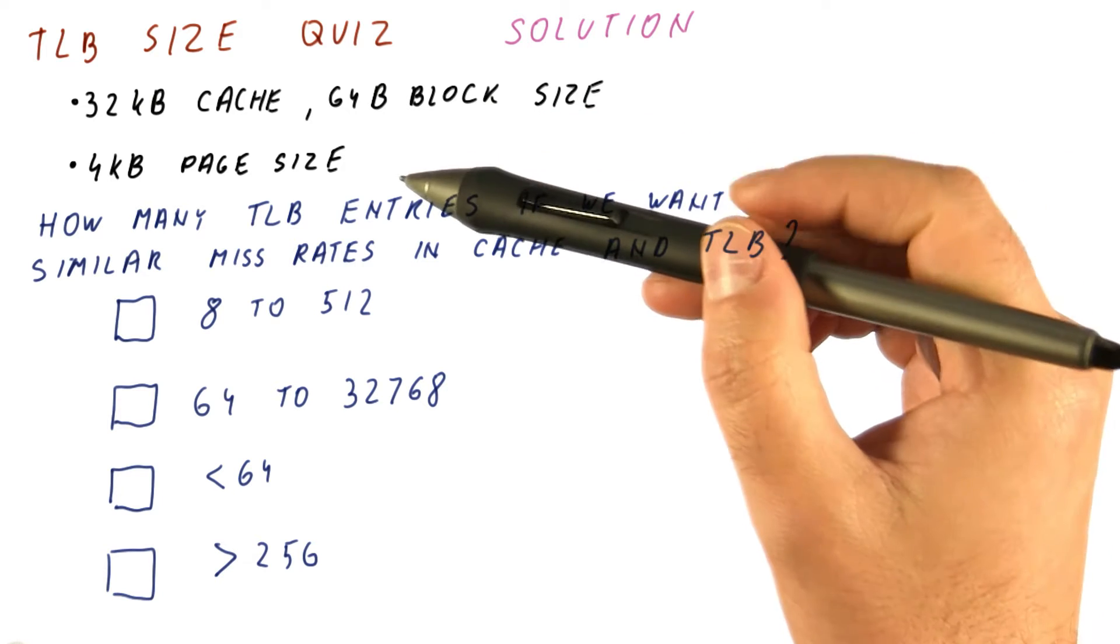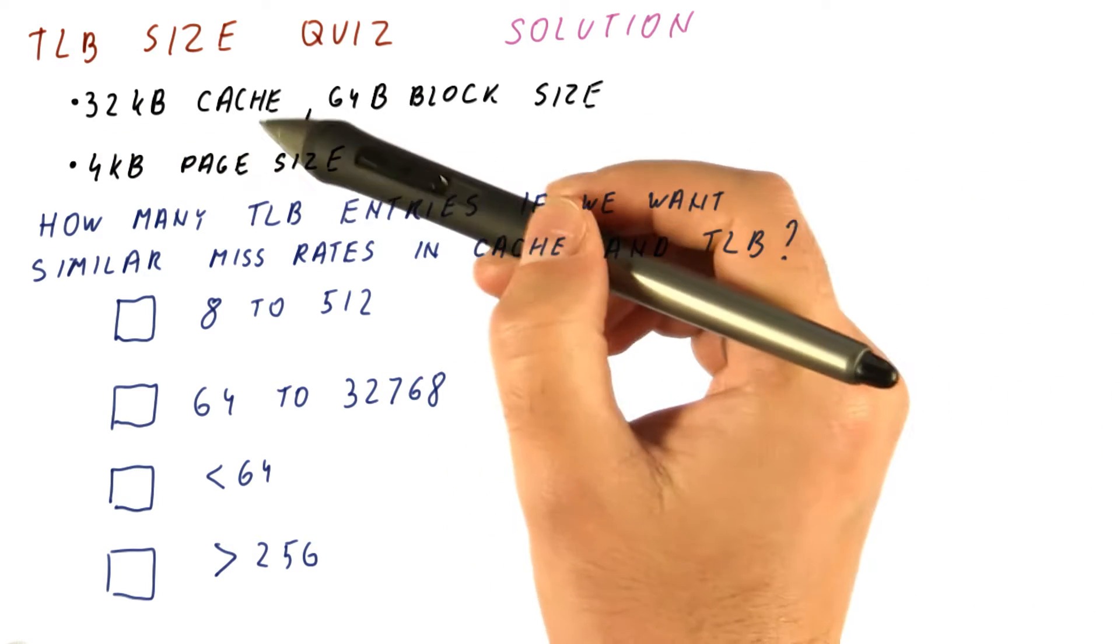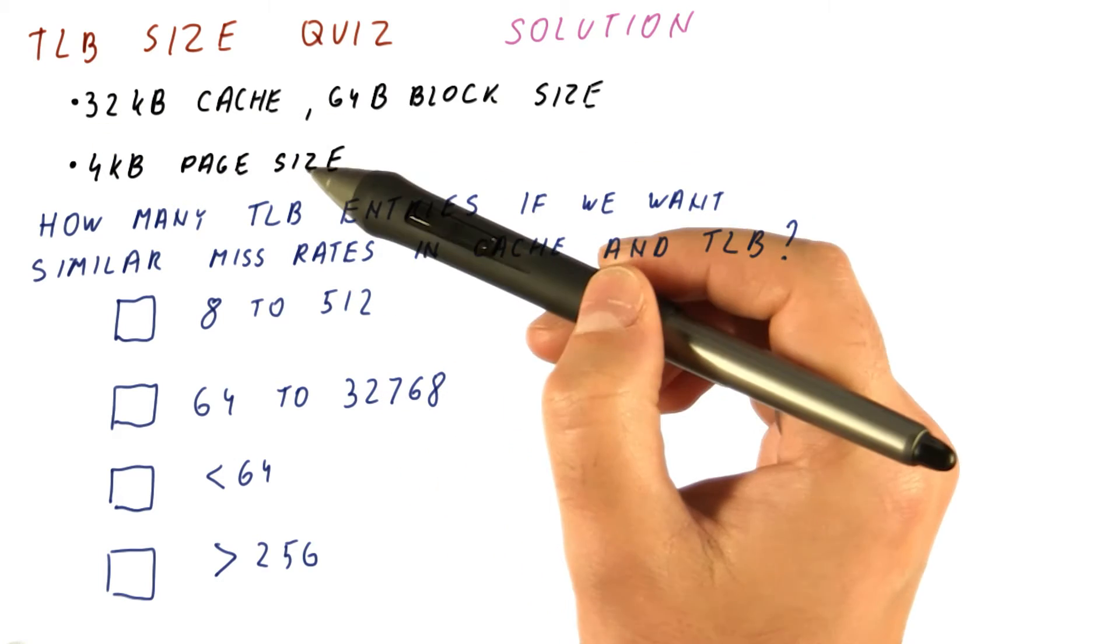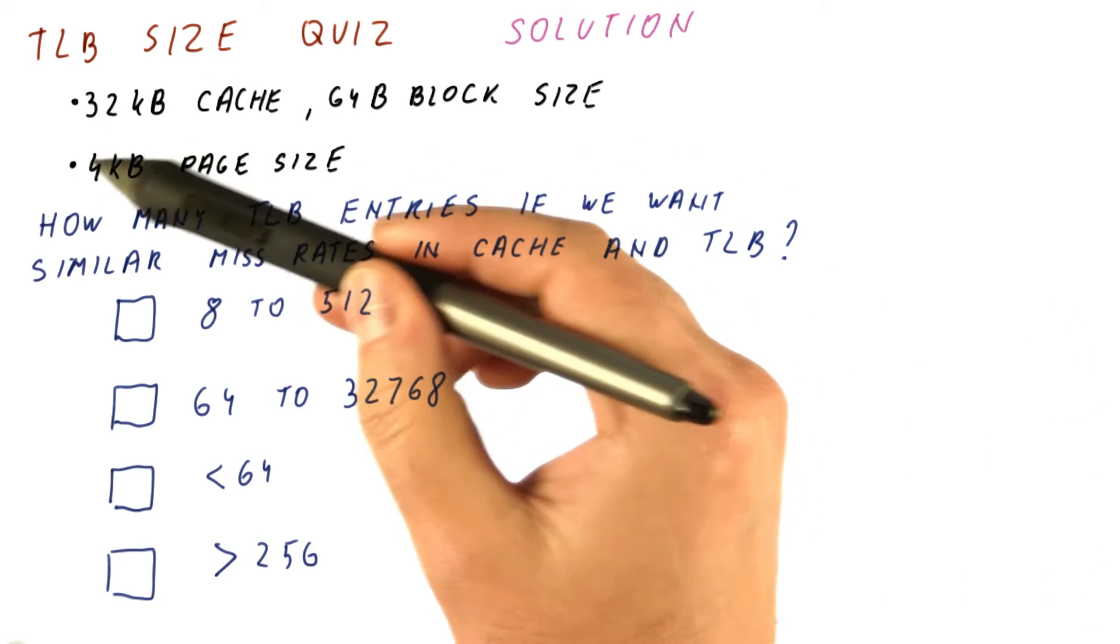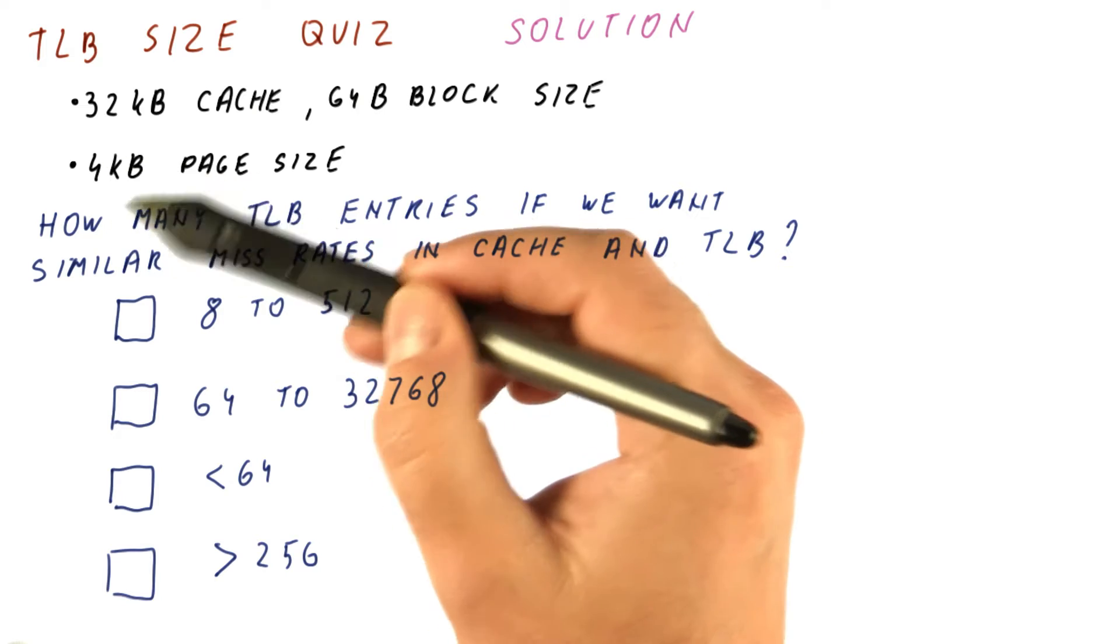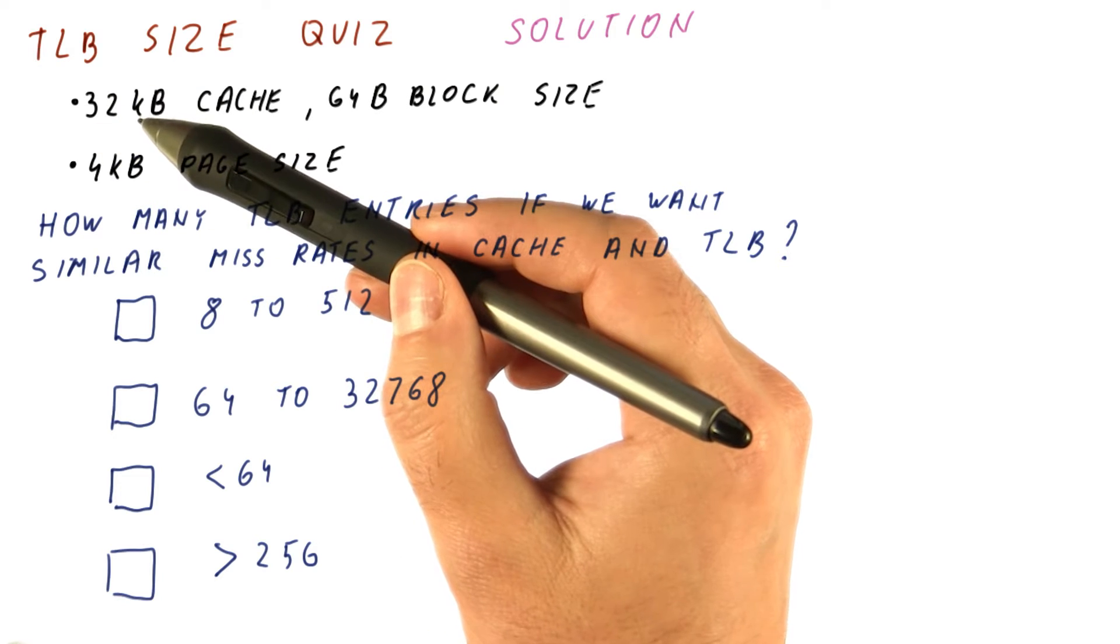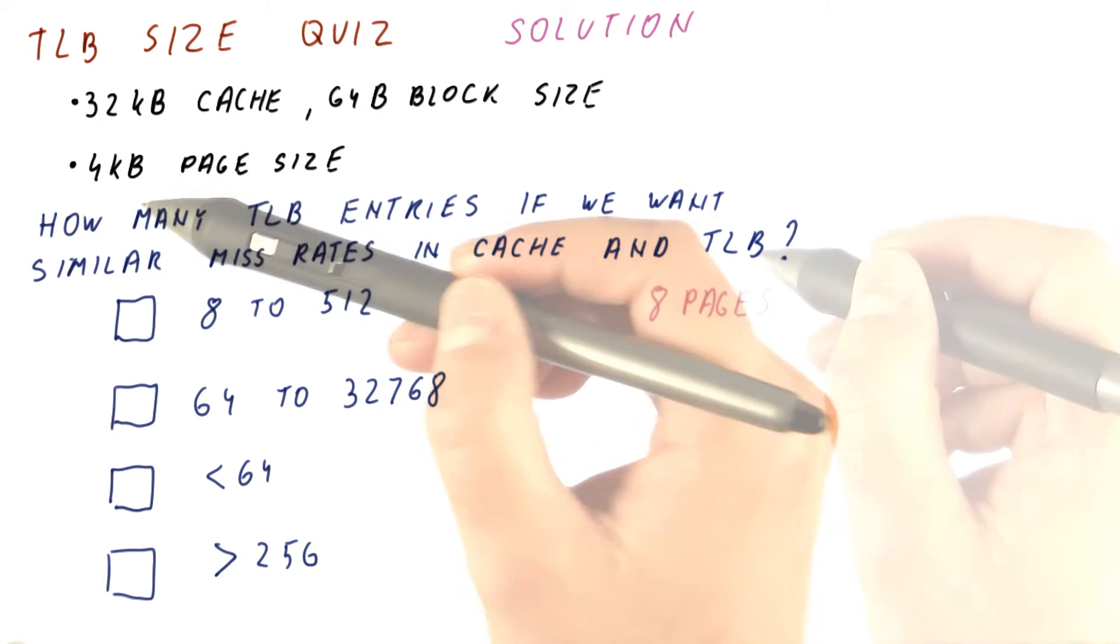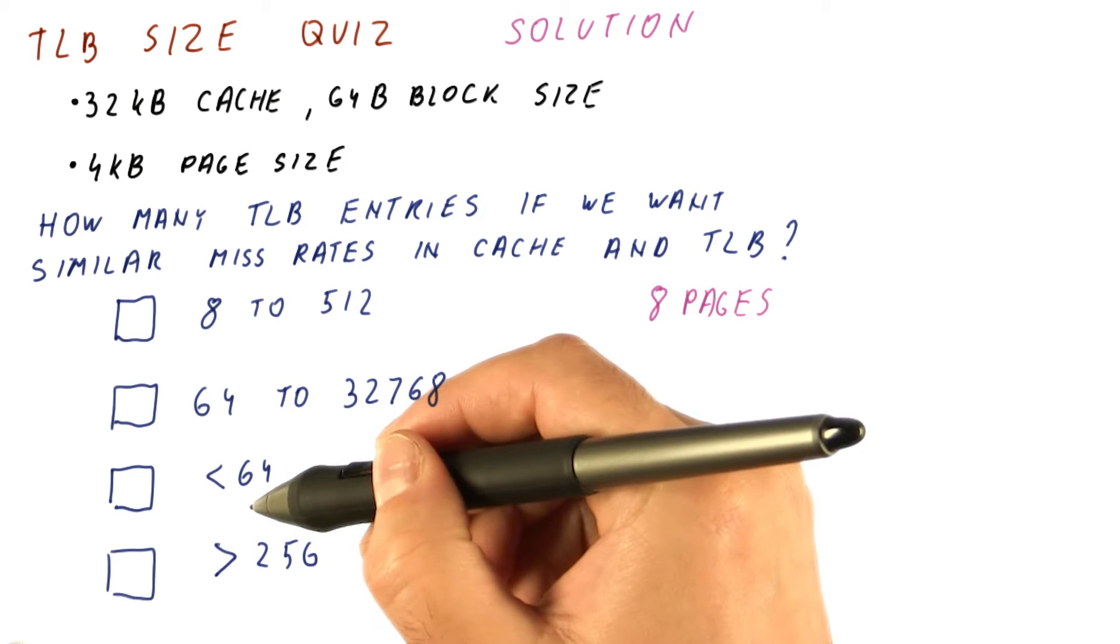Well, if the processor is just accessing up to 32 kilobytes of memory, then our TLB needs to cover the same amount of memory that the cache does. And that means we need eight pages. Now it looks like this would be the best answer.